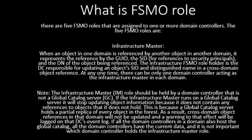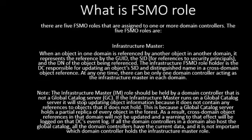Infrastructure Master. When an object in one domain is referenced by another object in another domain, it represents the reference by a GUID. The SID for reference to security principals and the DN of the object being referenced. The infrastructure FSMO role holder is the DC responsible for updating an object's SID and distinguished name in cross-domain object references. At any one time, there can be only one domain controller acting as the infrastructure master in each domain. The infrastructure master role should be held by a domain controller that is not a global catalog server. If the infrastructure master runs on a global catalog server, it will stop updating object information because it does not contain any references to objects that it does not hold.